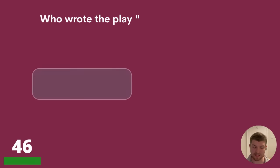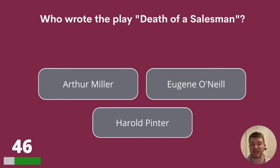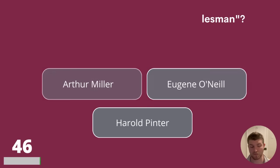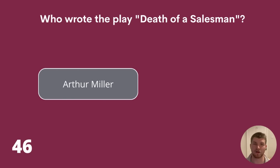Question 46. Who wrote the play Death of a Salesman? Was it Arthur Miller, Eugene O'Neill or Harold Pinter? The answer is Arthur Miller.